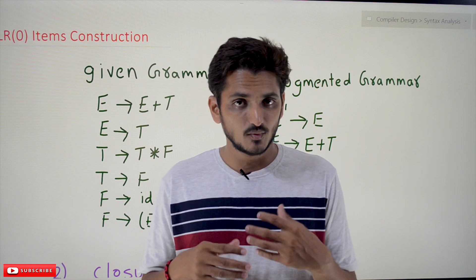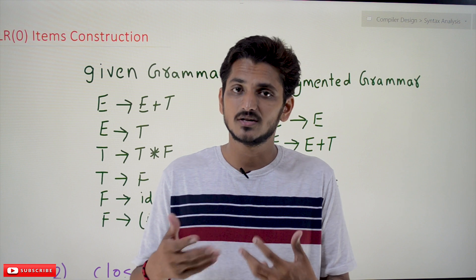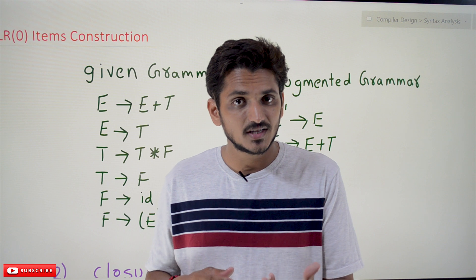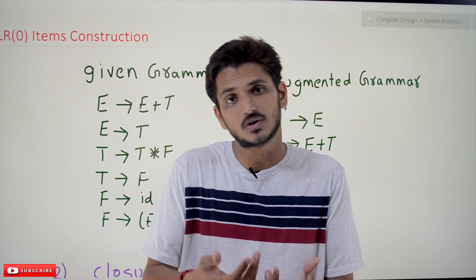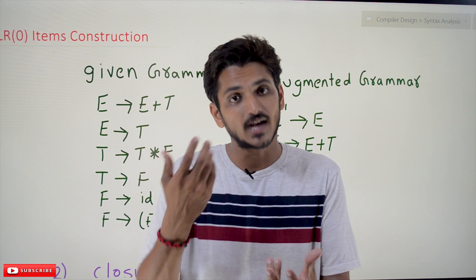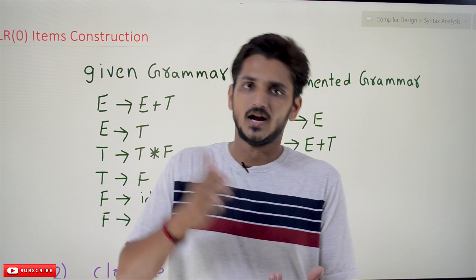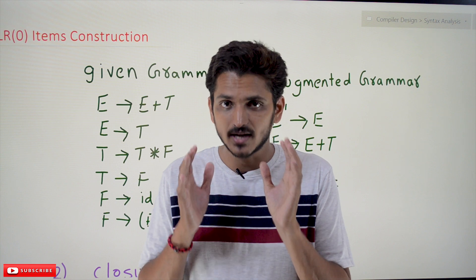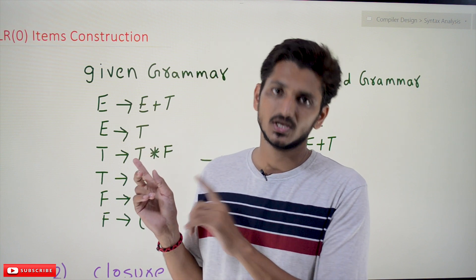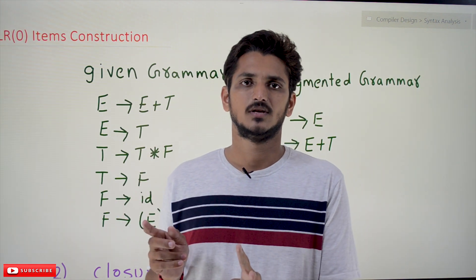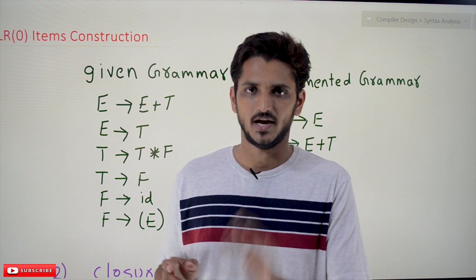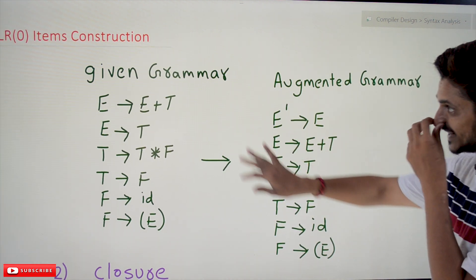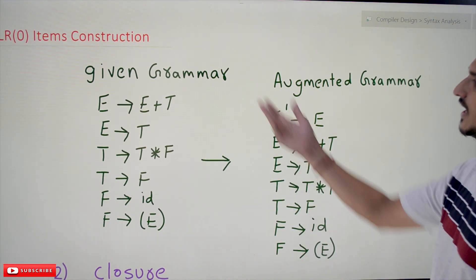In this class we will discuss how to construct LR(0) items — just follow the procedure. Why we are constructing this, how we use it to construct the table, and finding conditions for shift and reduce — those things will be discussed in our next class. You will get a good understanding in the next class. For now, just follow the procedure. We will take an example to understand how to construct LR(0) items.